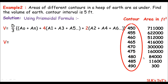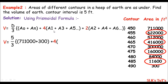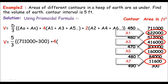The contour interval is 5 feet — you can confirm from the contours: 450, 455, 460 — a difference of 5 feet. The prismoidal formula uses 5/3 times the sum of the first and last contour areas, plus 4 times the sum of odd contour areas, plus 2 times the sum of even contour areas. Note: since the first contour area is already taken separately, the second contour area here acts as the first of the remaining, making it an odd contour area in the formula.